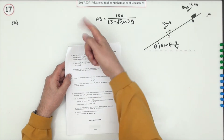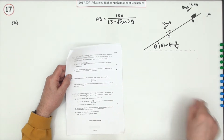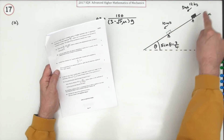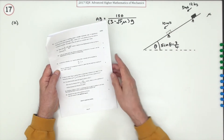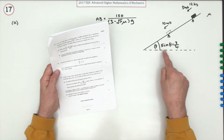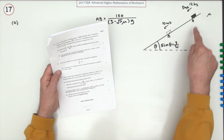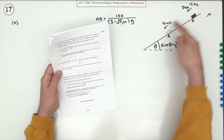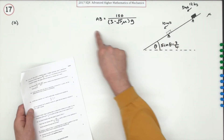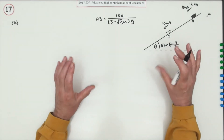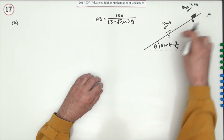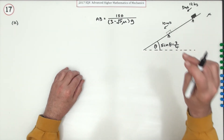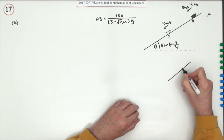Number 17 — the last question in the 2017 Mathematics Mechanics, 11 marks, back to a body on an inclined plane. A body of mass 12 kilograms is moving down a rough plane with an unknown coefficient of friction, at an angle theta. As it passes point A its speed is 5 m/s, and at point B further on its speed has increased to 10 m/s. We need to show that distance AB is given by a certain expression. I'll do it using forces and equations of motion.